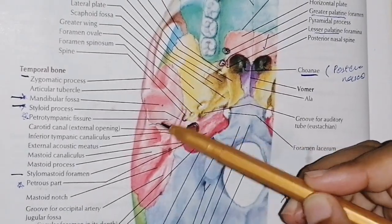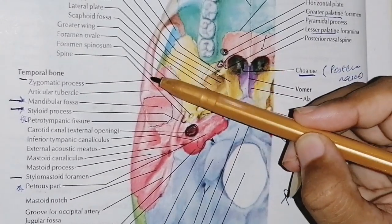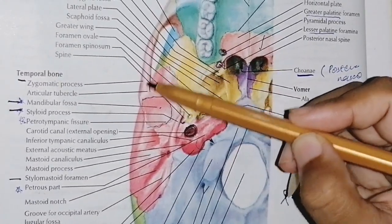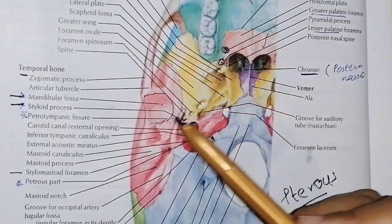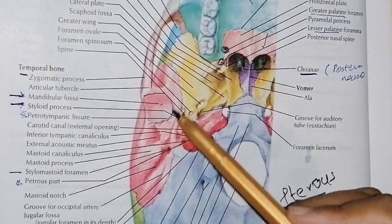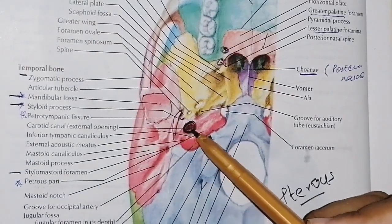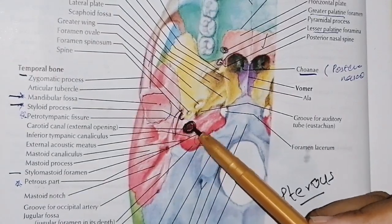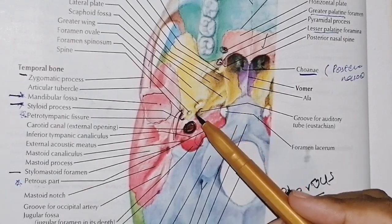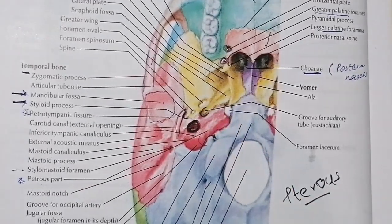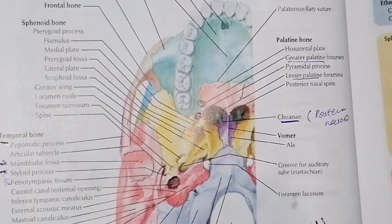This is the mandibular fossa. This is the articular tubercle. This is the zygomatic process and the zygomatic arch. There is the mandibular fossa and the styloid process. There is the carotid canal with a groove. We will revise all of this again.